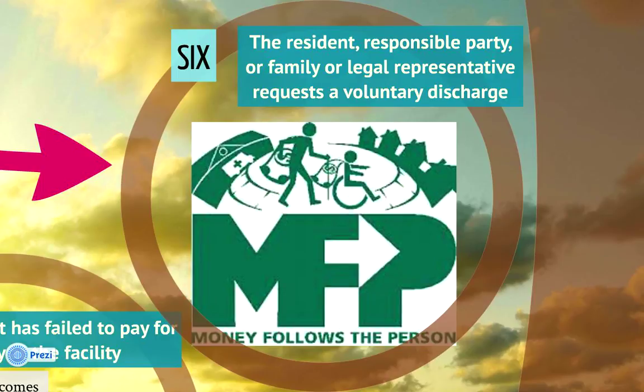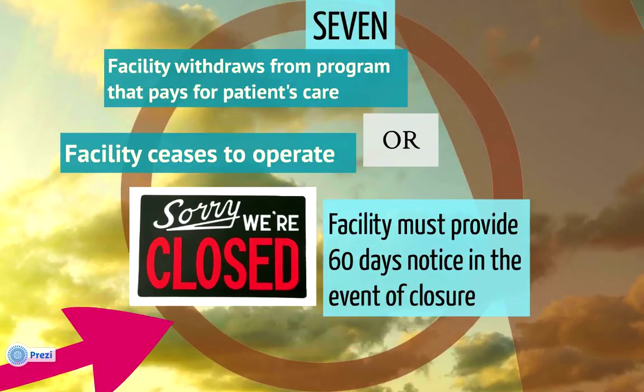The sixth situation is when a resident, responsible party, family member, or legal representative requests a voluntary discharge. A good example is the Money Follows the Person program, which provides assistance for Medicaid-eligible individuals who currently reside in a nursing home and wish to transfer back into the community, where they will receive support services in their home or apartment. The seventh situation is when the facility withdraws from the program that pays for the patient's care, like Medicare or Medicaid, or when the facility ceases to operate.